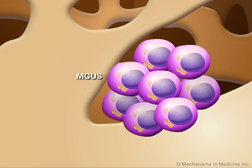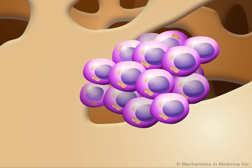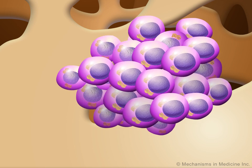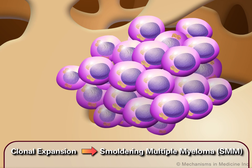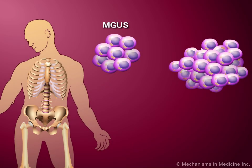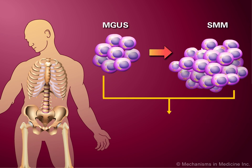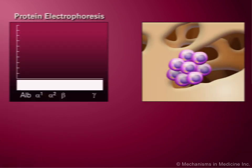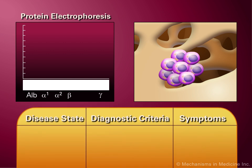If this clonal population becomes larger while retaining a low proliferative capacity, it results in smoldering multiple myeloma. As both MGUS and smoldering myeloma feature an absence of symptoms and end-organ damage, the levels of M-protein and bone marrow plasma cells are used to distinguish between the two.